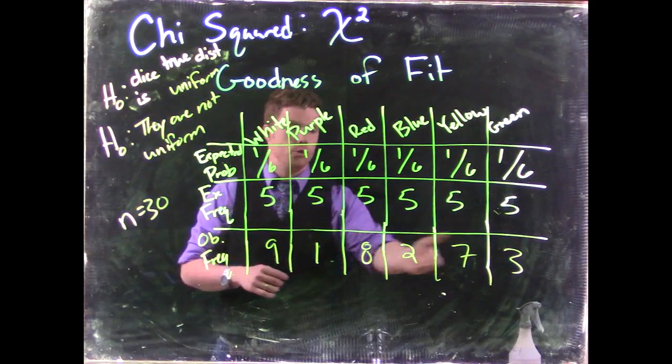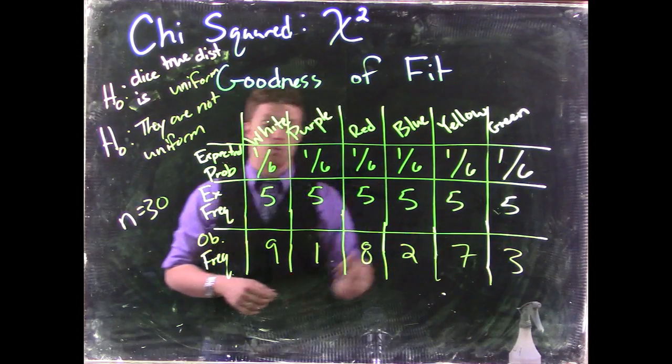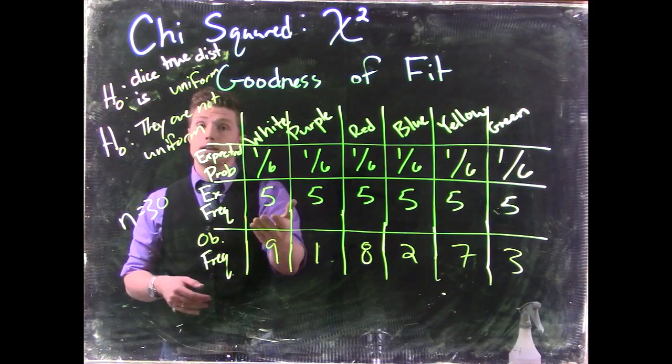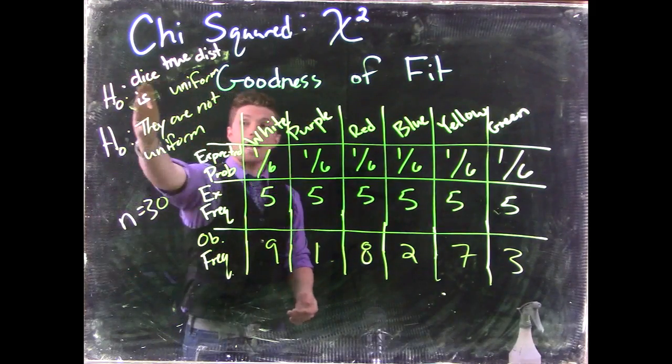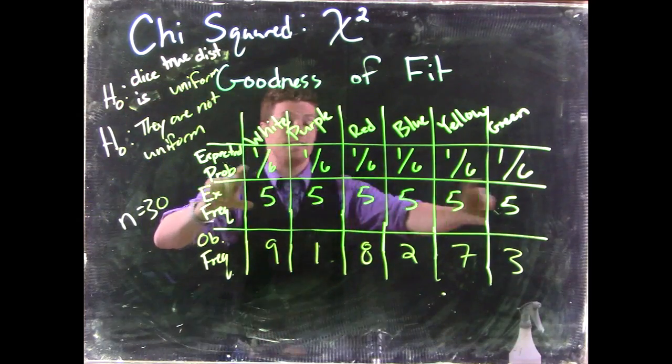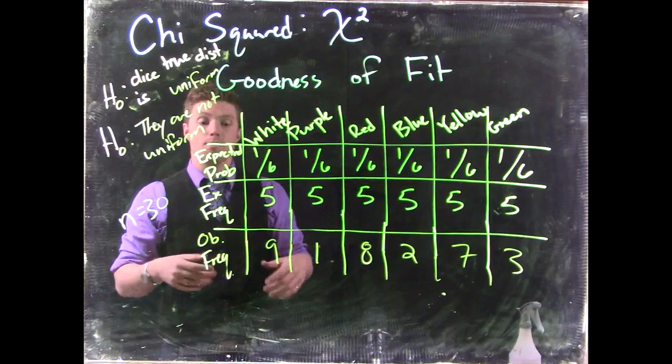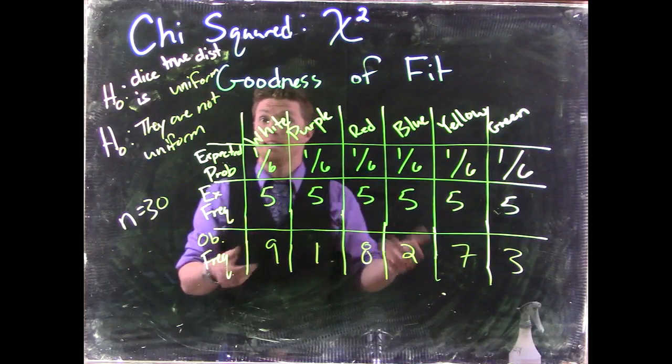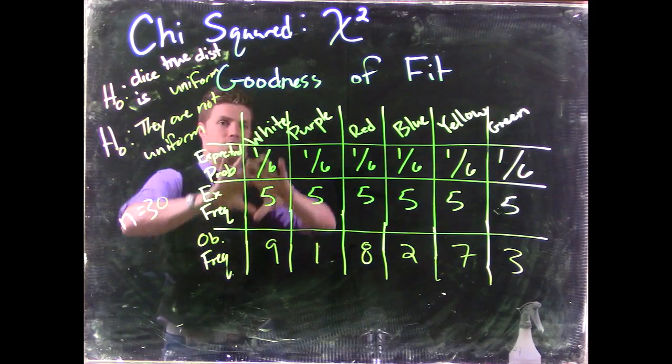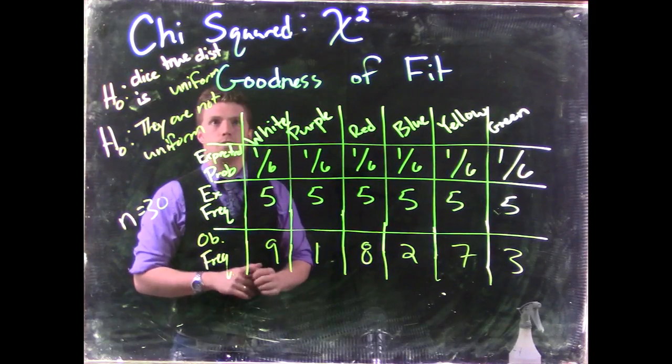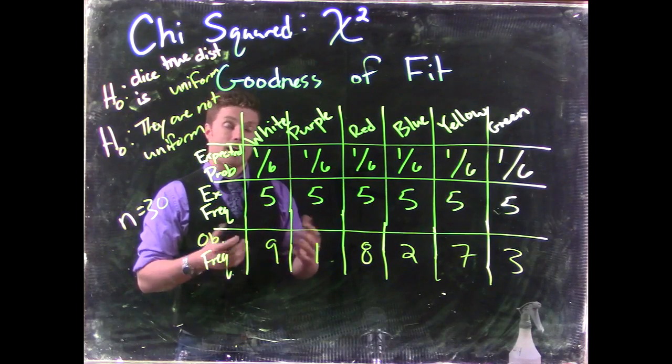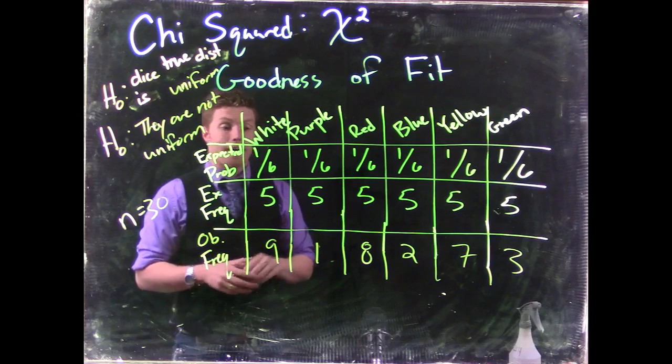So we've got this observed frequency, and we want to know, is that significantly different from our expected frequency for us to reject the null hypothesis that the distribution of this dice is uniform, and instead claim that it is not uniform, or that it is in fact a loaded dice. And so this is the concept of the goodness of fit analysis that we use with our chi-squared distribution.